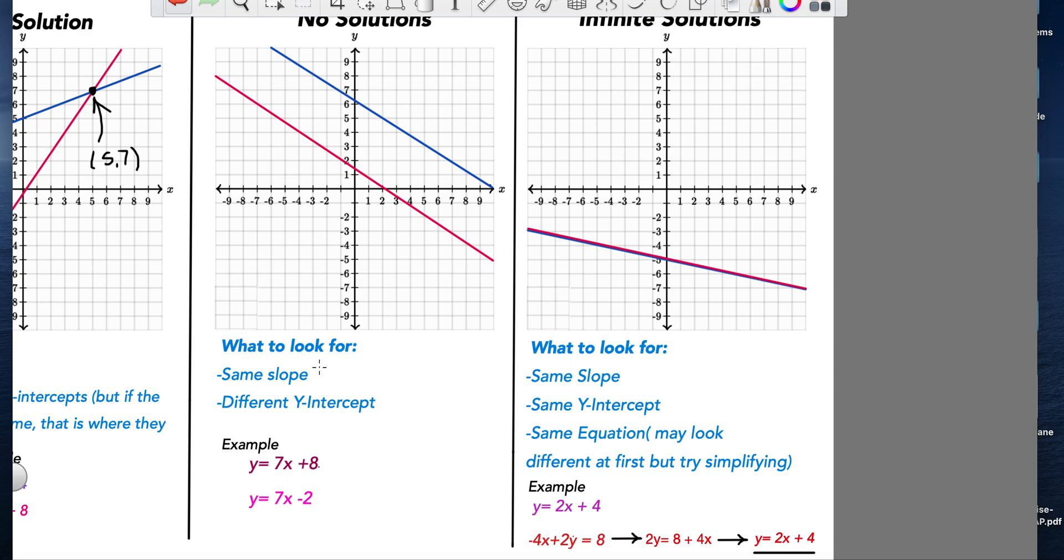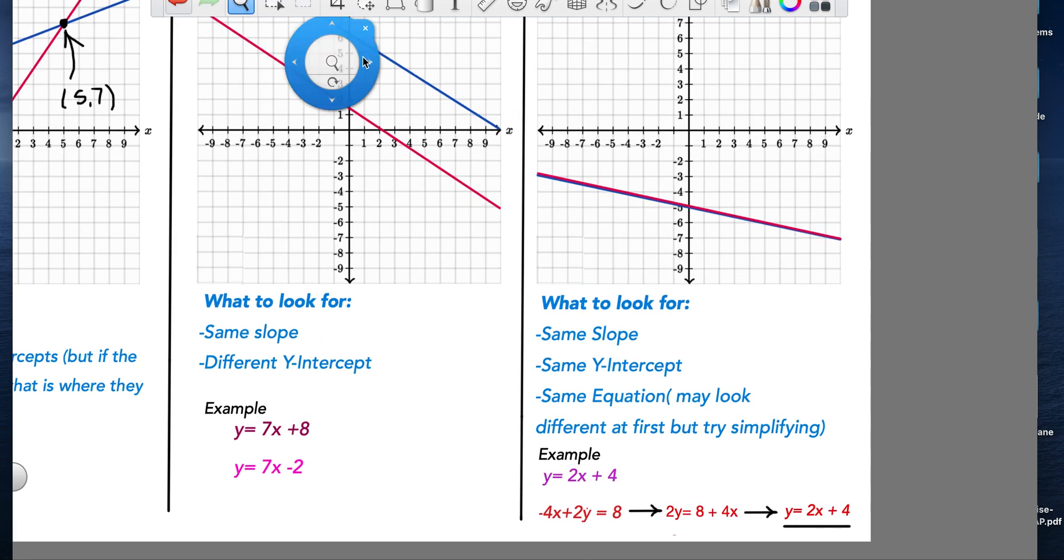So in looking at what that looks like in the equations, you're looking to find if they have the same slope, which in this case they have the same slope of seven, but different starting points. That means they will never catch, they will never intersect and therefore we'll have no solutions.